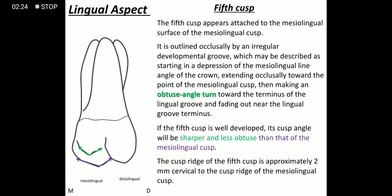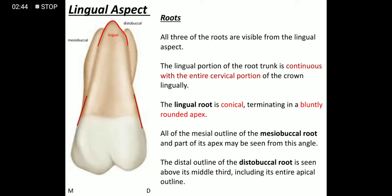The fifth cusp tip forms an obtuse angle, but it is sharper and less obtuse than the mesolingual cusp tip. The tip of the fifth cusp and the mesolingual cusp are at a distance of somewhere around 2 mm from each other.